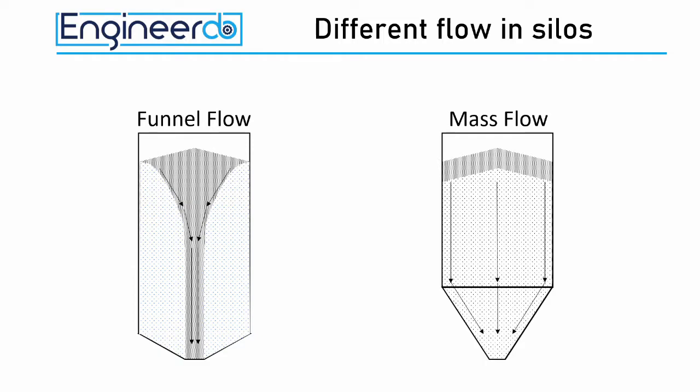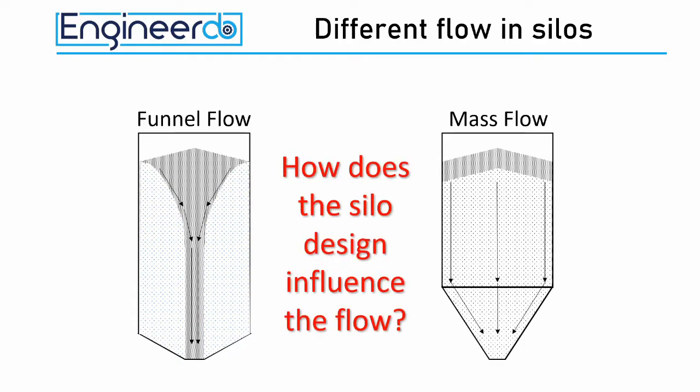On the left hand we expect funnel or also called core flow. The material builds a funnel inside the silo and the bulk material flows from the top through the funnel to the outlet. On the right hand the whole material inside the silo is activated and flows evenly down to the outlet. But how does the design influence the particle movement?